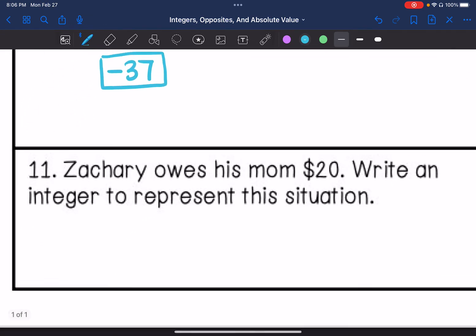Number 11. Zachary owes his mom $20. Write an integer to represent this situation. So he owes money. That means that he has less than zero because he owes somebody. So the integer would be negative $20.